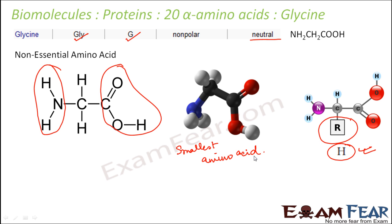Glycine tastes sweet, and the word 'glycos' in Greek means sweet, which is why it was named glycine. It was discovered by a scientist named Henri. He discovered it when gelatin was boiled with sulfuric acid, and glycine was formed — that was the first time it was found and described.